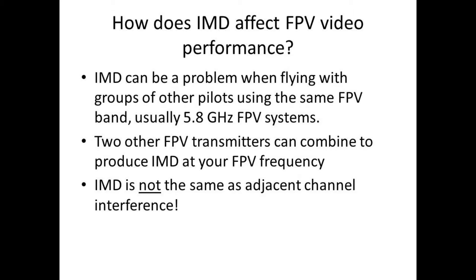The conditions in which we do FPV racing can be particularly bad from an IMD standpoint. That's because we often have two, three, four, five, six, maybe even more transmitters all close to one another physically and close to the receivers in some cases, and in many cases the transmitters are quite strong in power.